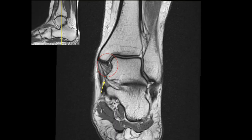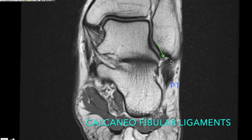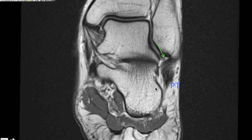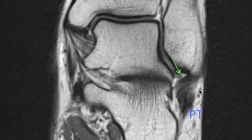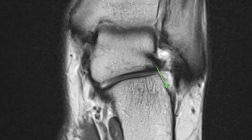On the coronal images we look at the calcaneofibular ligament, which is thick towards the fibular attachment and becomes thin towards the calcaneal attachment. This ligament is present deep to the peroneal tendons. It is an oblique ligament, so as you go posteriorly you can see it goes towards the calcaneum and has a thin attachment there.